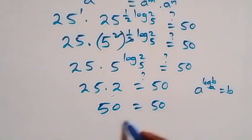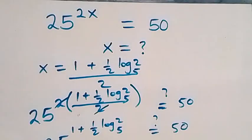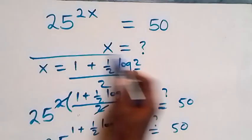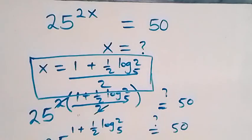Left hand side equals right hand side, so we conclude that x equals to (1 plus half log₅2) over 2 satisfies the given problem. Thank you for watching — don't forget to subscribe for more videos, turn on the notification bell, share this video, give a thumbs up, and put your comment in the comment section. See you next class, bye for now.